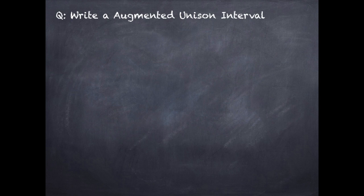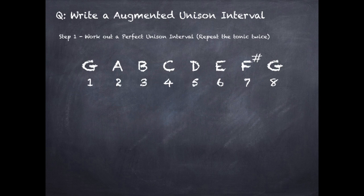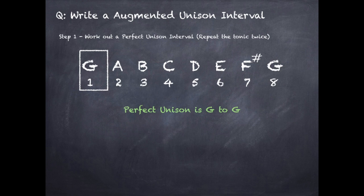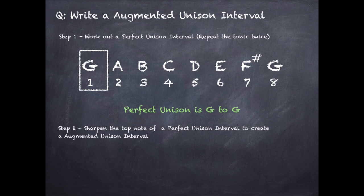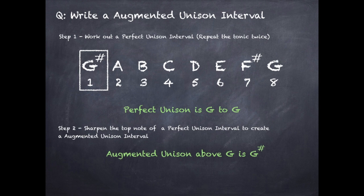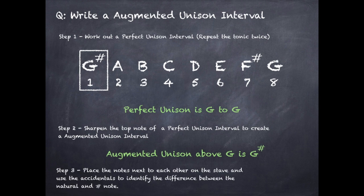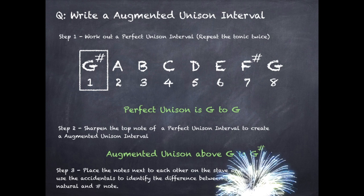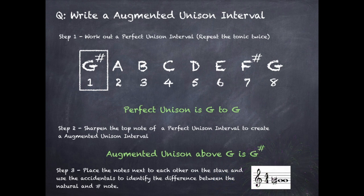Question: write an augmented unison. Step one is to work out a perfect unison interval by repeating the tonic note twice. So a perfect unison is G to G. Step two is to sharpen the top note of the perfect unison interval to create an augmented unison interval. So we sharpen the G and it becomes G sharp — an augmented unison above G is G sharp. Step three: place the notes next to each other on the stave and use accidentals to identify the difference between the natural and the sharp note.